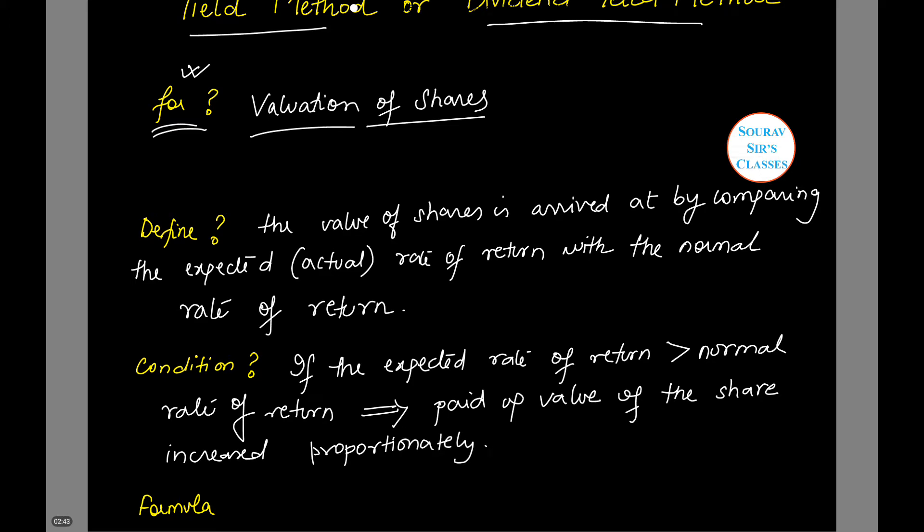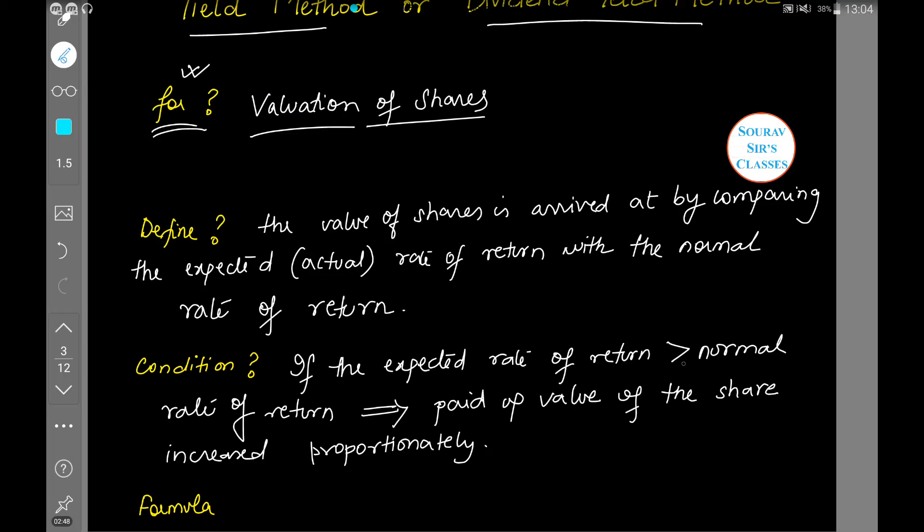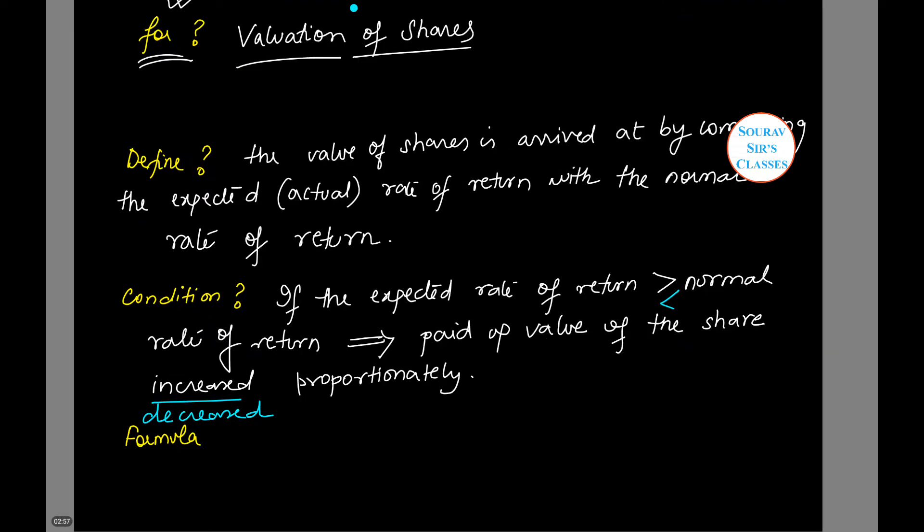And if the expected rate is less than the normal rate, then the value will decrease proportionately. So what is the formula?